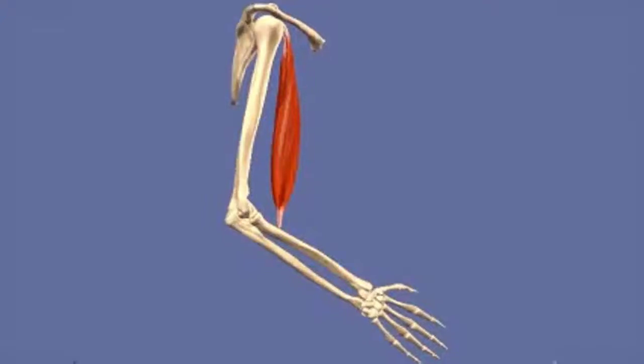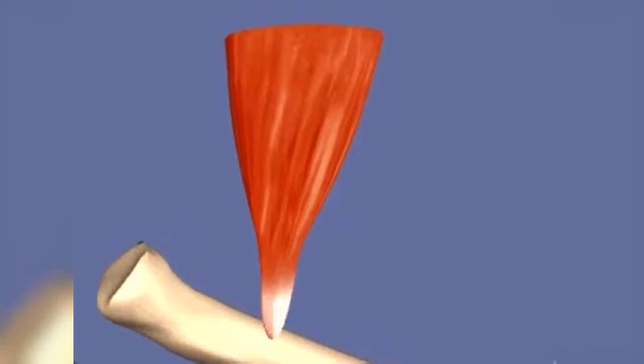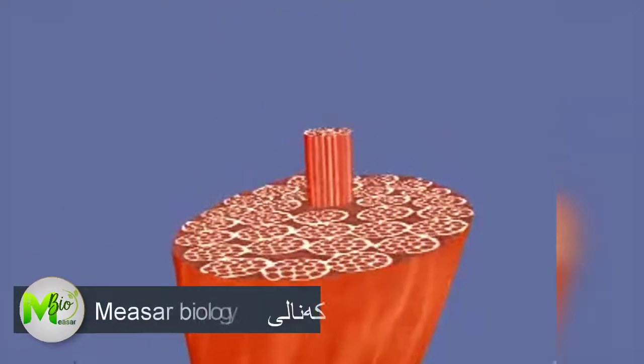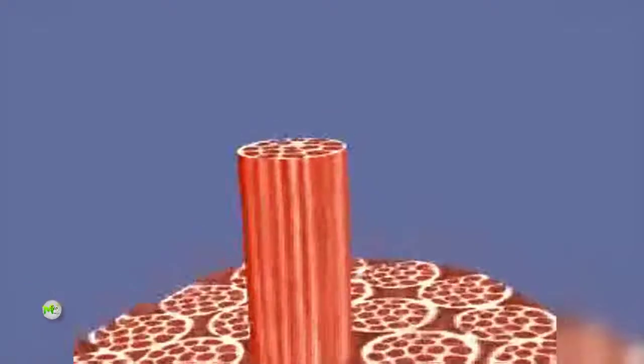Skeletal muscles like the biceps brachii attach to bone via connective tissue called tendons. Muscles are composed of bundles of muscle fibers. Each bundle is separated by connective tissues known as perimysium. Each fasciculus is made up of muscle fibers.